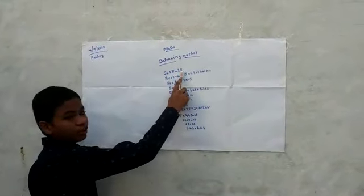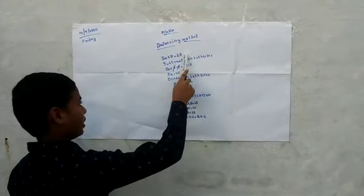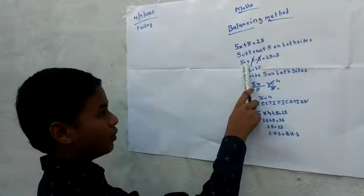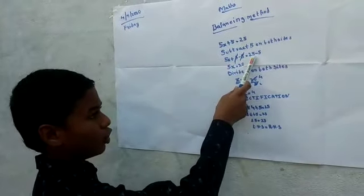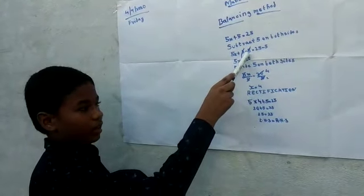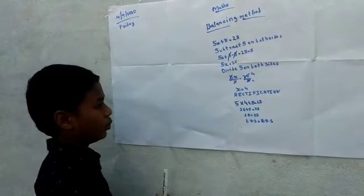5x plus 5 is equal to 25. Subtract. Do minus on both sides. Here in RHS, do subtract. 5x plus 5 minus 5 is equal to 25 minus 5. Here plus 5 minus 5 cut means 0 will come. Then 5x is equal to 20.